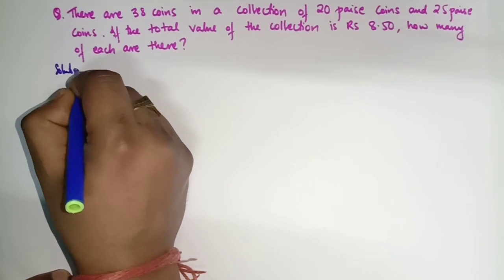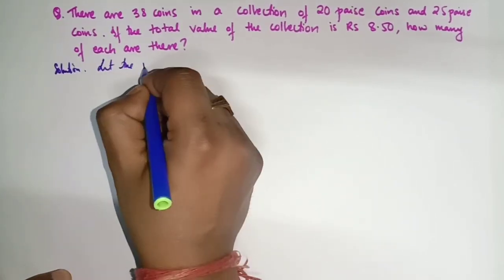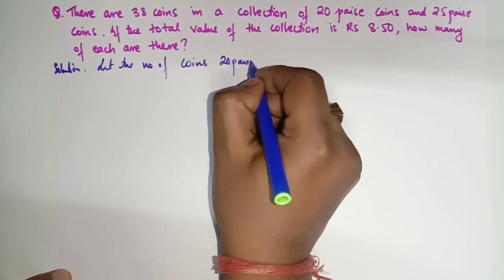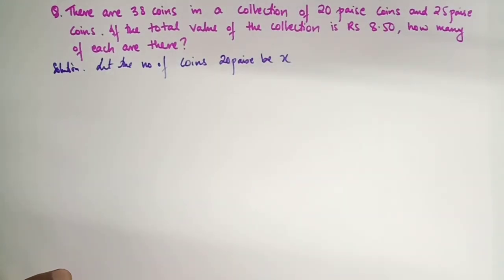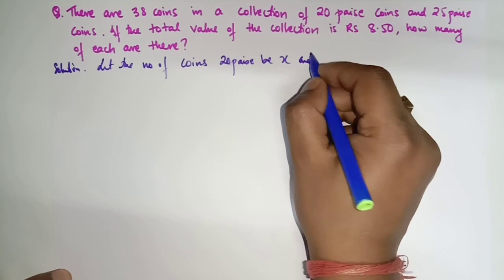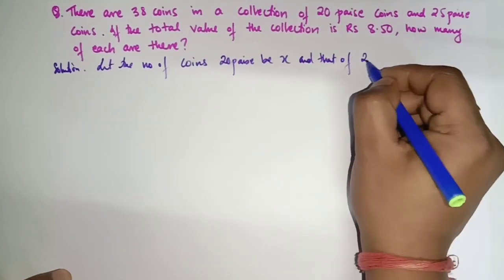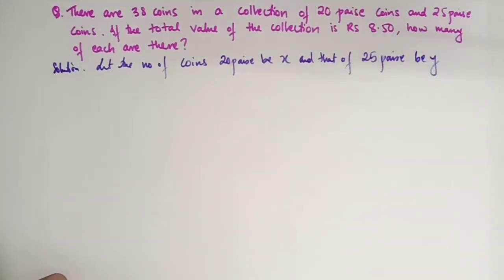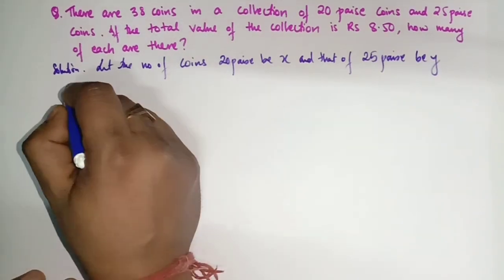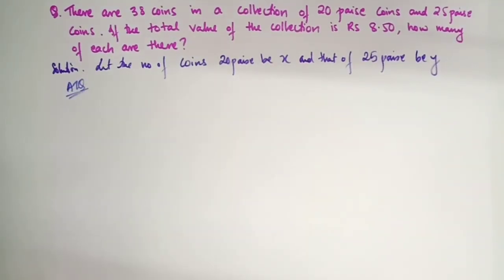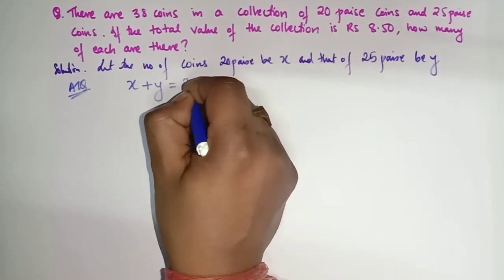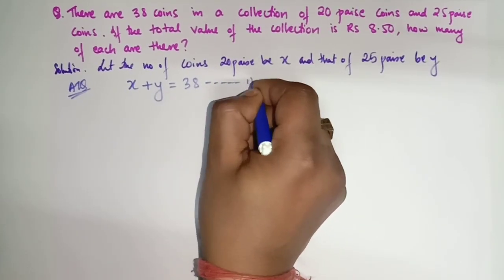Solution: Let the number of 20 paise coins be x and the number of 25 paise coins be y. According to Equation 1: total coins are 38, so x + y = 38. We take this as Equation 1.